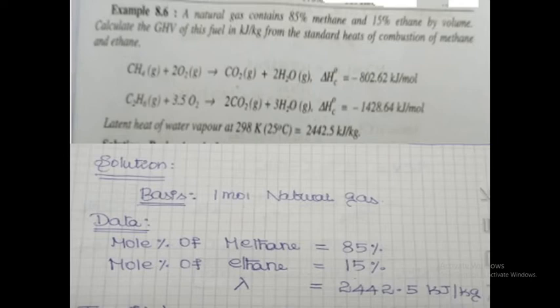Data: mole percentage of methane = 85%, mole percentage of ethane = 15%. All component percentages are given by volume, and since volume percentage equals mole percentage, we take the mole percentage of methane and ethane equal to their volume percentages. The latent heat λ = 2442.5 kJ/kg.